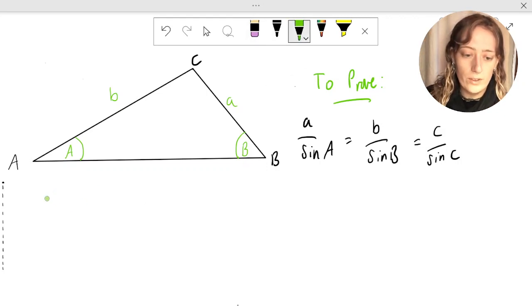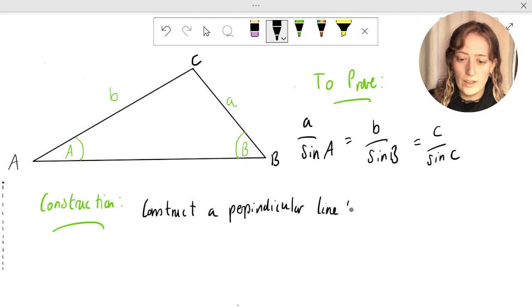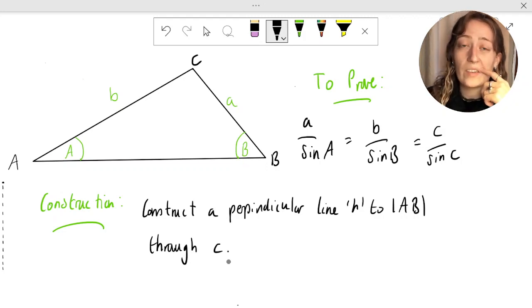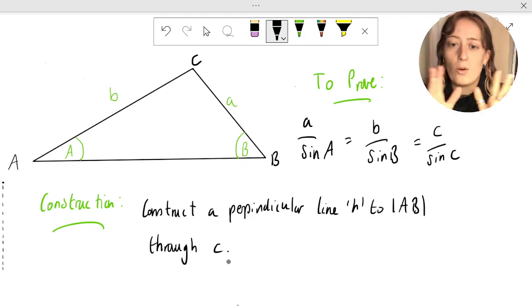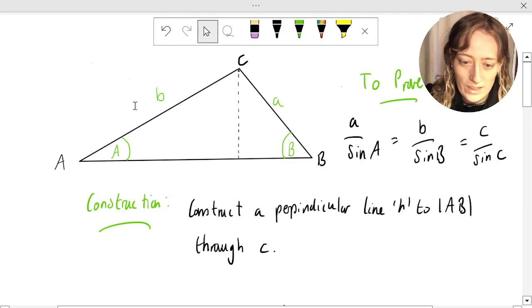We've got a small construction for this proof. Construct a perpendicular line h to AB through c. Whenever we do this construction, I always say just do a dotted line to distinguish between what we have started with and what we're adding to the diagram. So I'm going to put a dotted line perpendicular to AB through c, something like that.